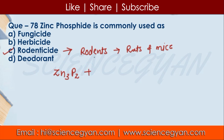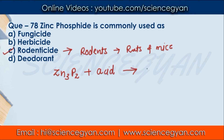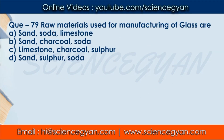When zinc phosphide is ingested by rodents, it reacts with the acid present in their stomach. After reacting, it releases a gas called phosphine. Phosphine is a very poisonous gas, and this is the reason for the death of the rodents.